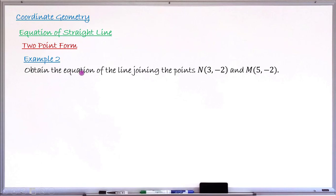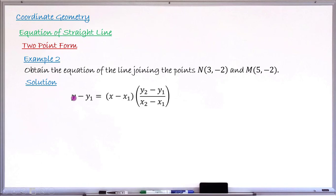Example number two: obtain the equation of the line joining the two points N with coordinate (3, −2) and M with coordinate (5, −2). We want the equation of the line passing through these two points. The solution: write the formula — y minus y₁ equals, in the first bracket, x minus x₁, times a large bracket containing the fraction y₂ minus y₁ over x₂ minus x₁. Let point N be (x₁, y₁) and point M be (x₂, y₂).